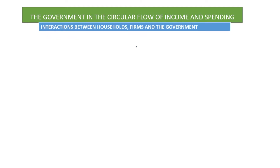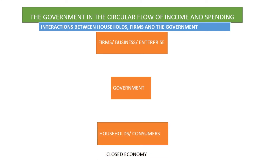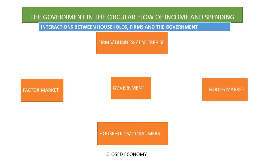The government in the circular flow of income and spending. We are focusing on the interactions between households, firms, and the government. This is a closed economy since there is no foreign sector involved. We have three participants: namely the businesses, the government, and the households. And we have two markets: the goods market and the factor market.